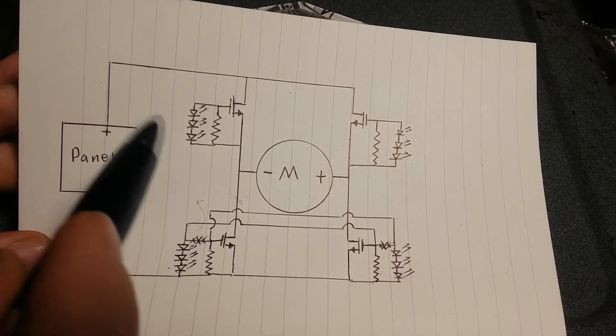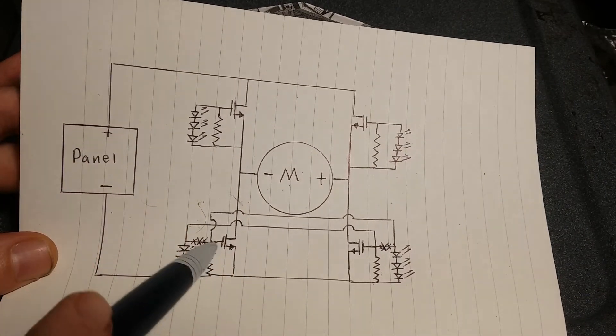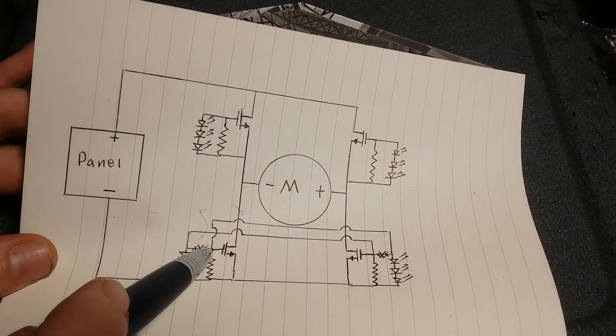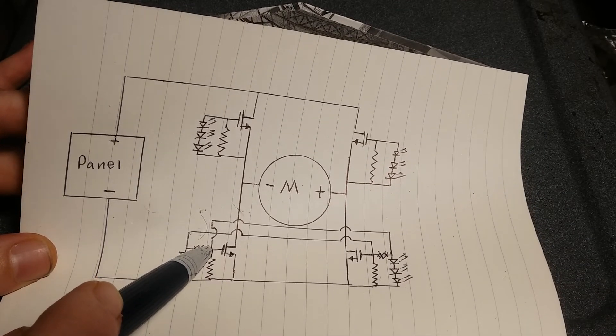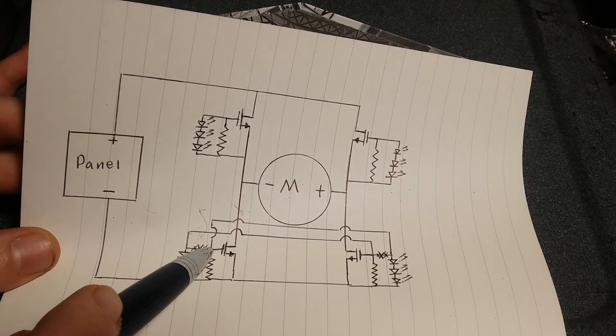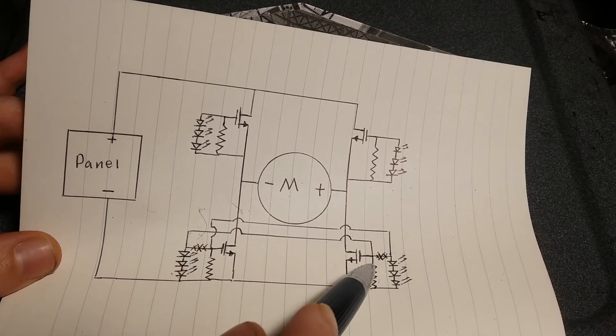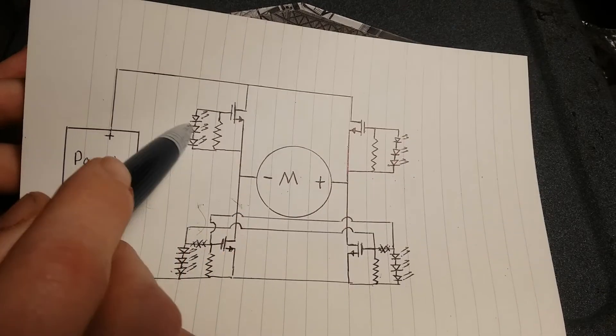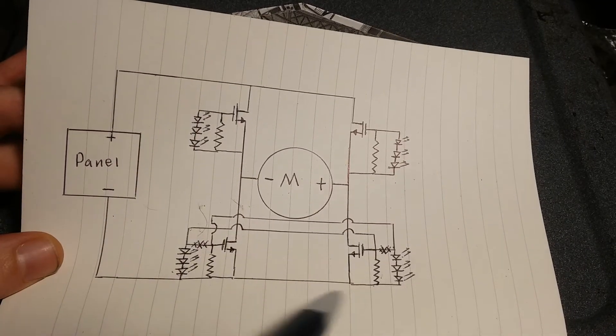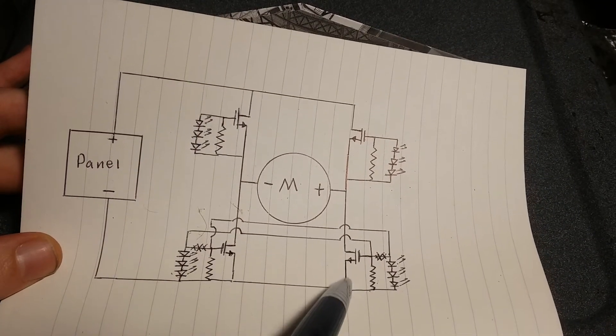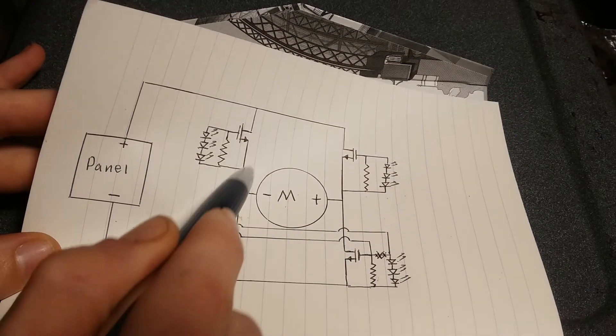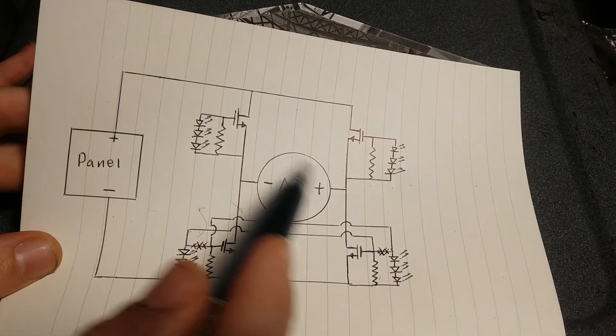And so when light shines on them, you're pulling the gates of the MOSFETs high and just high enough basically to let current flow. So you're going to be pulling, this one's going to be pulling the gate of this one high and this one's going to be pulling the gate here high. So you're going to get current flowing up through the motor like that. And it's going to spin one direction.